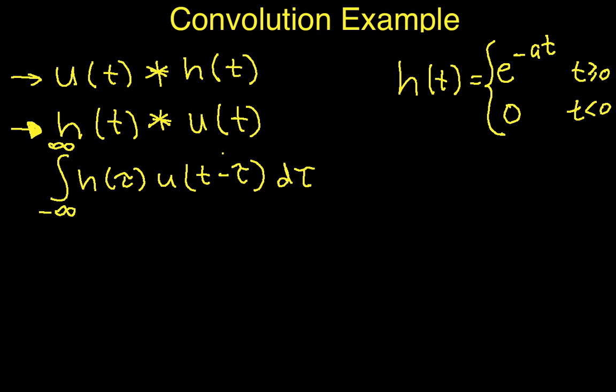Before we actually start doing the convolution, we need to think about what this means. In this integral, tau is a dummy variable of integration. For each value of t, we take h of tau, multiply it by u of t minus tau, and then we integrate over tau.